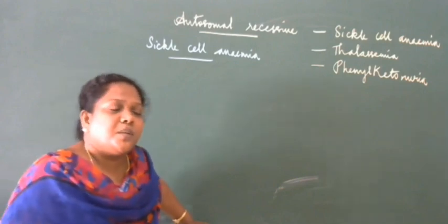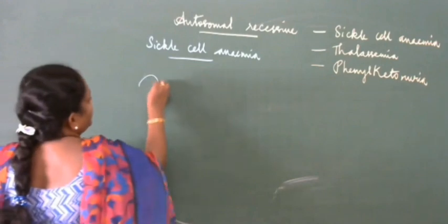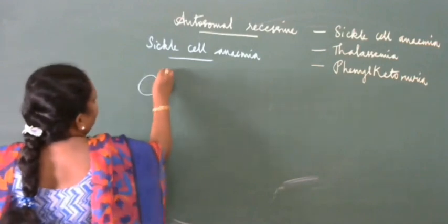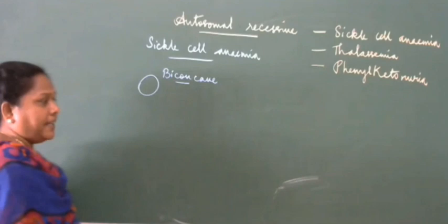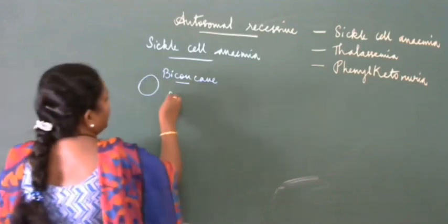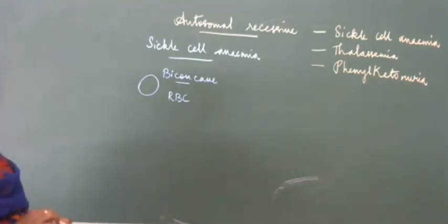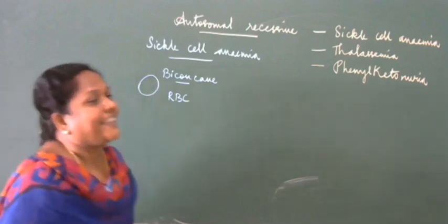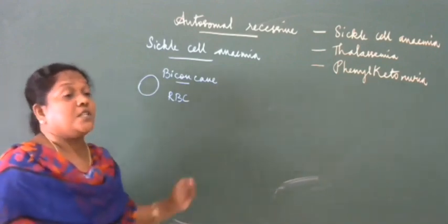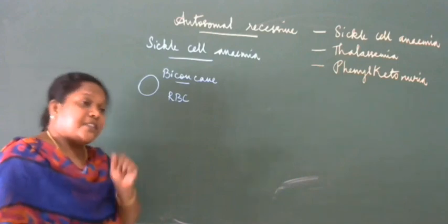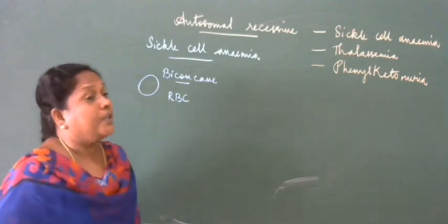What is the normal shape of RBC? It is biconcave. When the gene is normal and there is no defect in the gene, the gene responsible for producing hemoglobin functions normally, and the RBC structure and shape will also be normal.